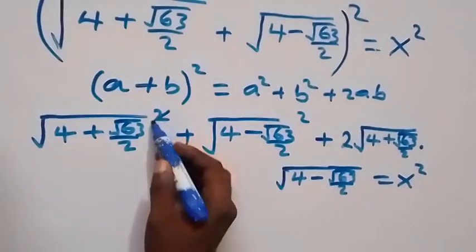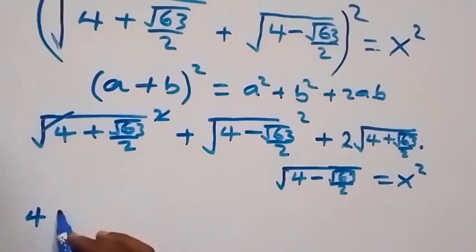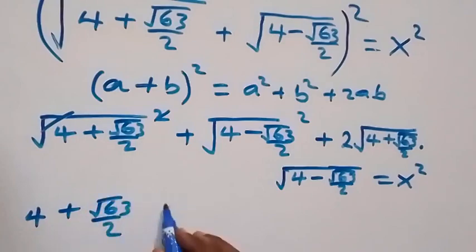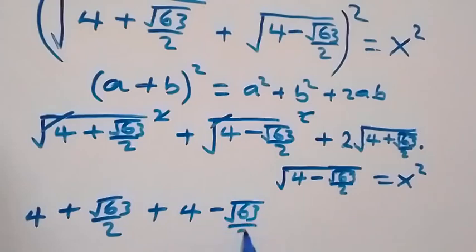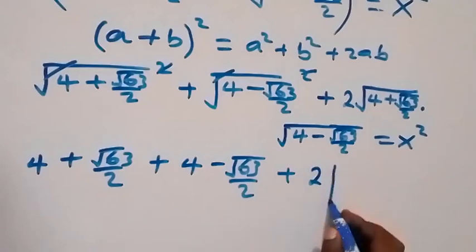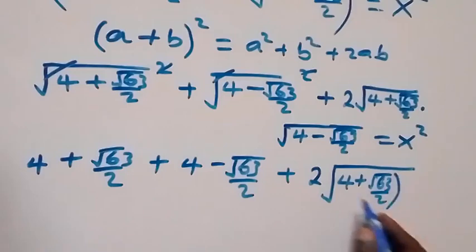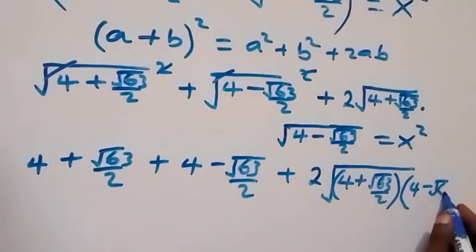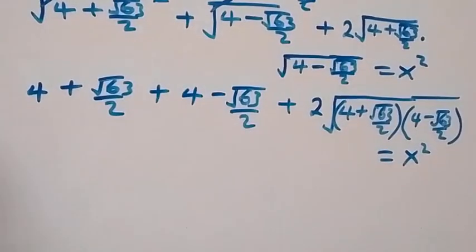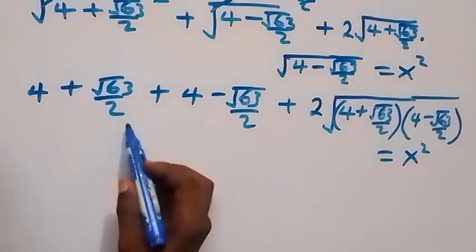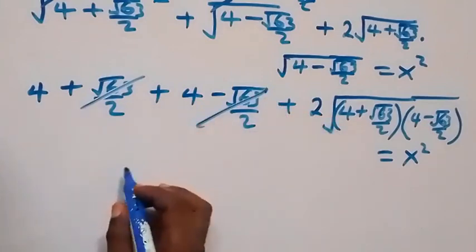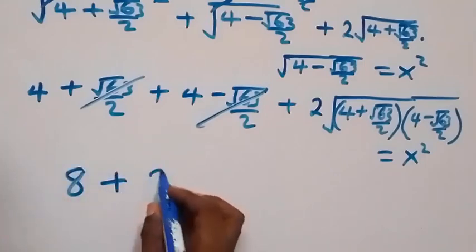When we simplify, the square cancels the square root, giving us (4 plus root 63) over 2, plus (4 minus root 63) over 2. The plus root 63 over 2 and minus root 63 over 2 cancel out, leaving 4 plus 4, which is 8. So we have 8 plus 2 times the root of the remaining product.